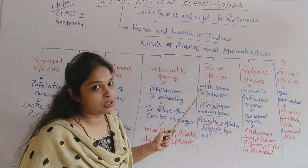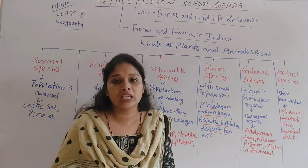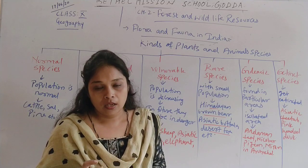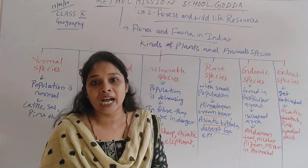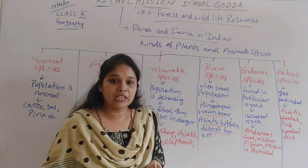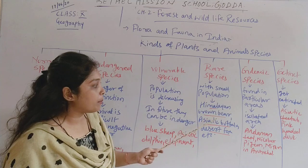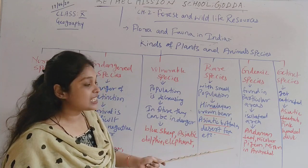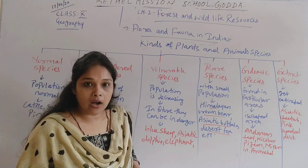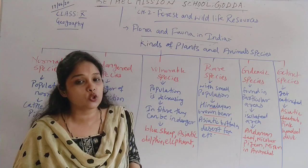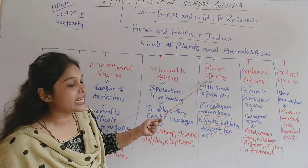Next is rare species — their population is naturally very small because they are unique animals and plants that cannot be found everywhere. That is why their population is very less. Examples include the Himalayan brown bear, Asiatic buffalo, desert fox, and Mowa — rare animals and plants that are found in very few numbers.